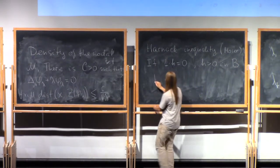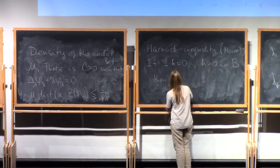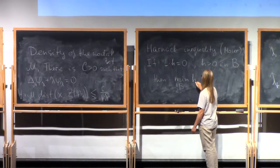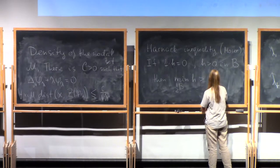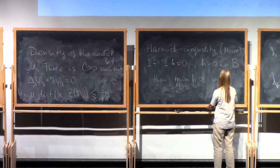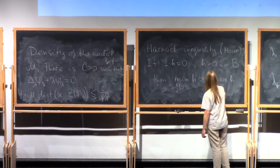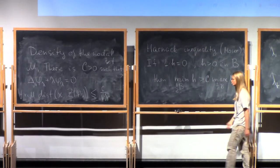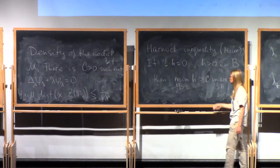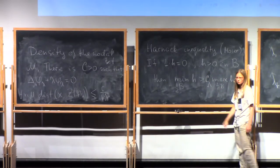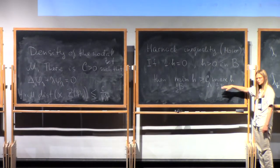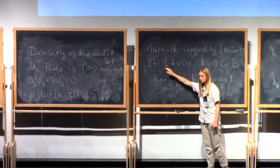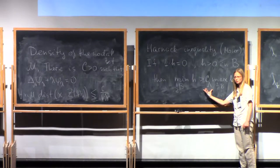And it's the following: if I have a solution to my elliptic PDE that is positive in some ball, and the half of this ball, the minimum of the function is larger than the maximum of the function times some constant C. And the constant depends only on the Lipschitz constant of the operator. So for this result, you don't need Lipschitz coefficients. You need that you have uniformly elliptic equation, and then the constant here depends only on the ellipticity constant.